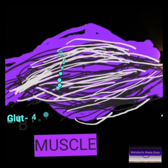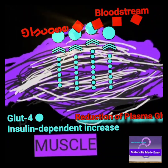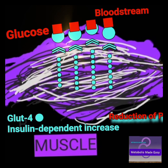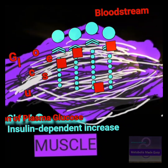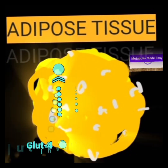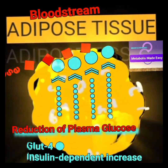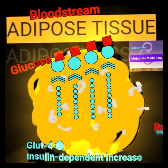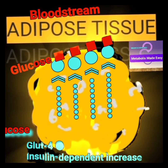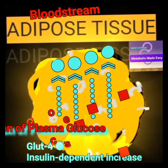By specifically increasing the number of glucose transporters, GLUT4, on the surface of these two tissues, muscle and adipose tissue will pick up glucose from the bloodstream in an insulin-dependent manner. These two tissues constitute a significant portion of body mass, and as such they can contribute to a significant amount of uptake of glucose from the bloodstream, reducing blood glucose levels.